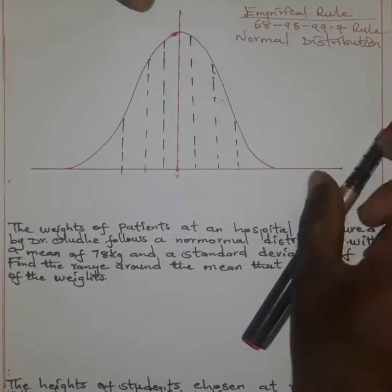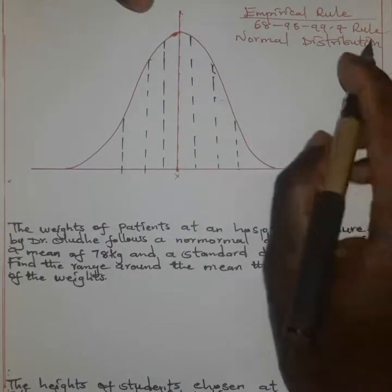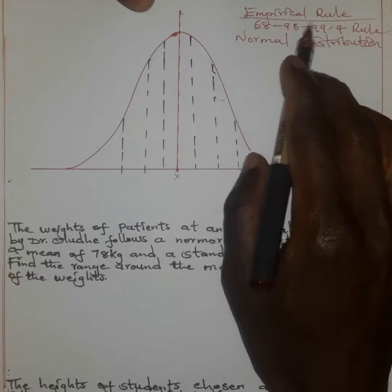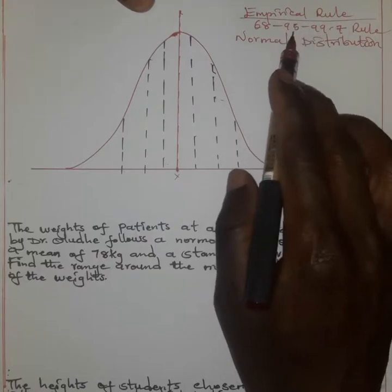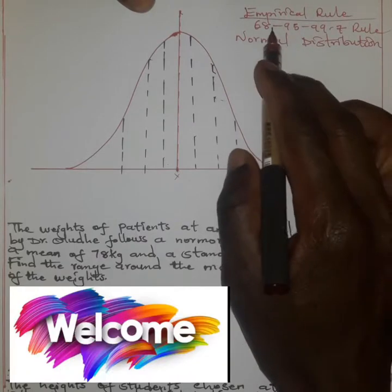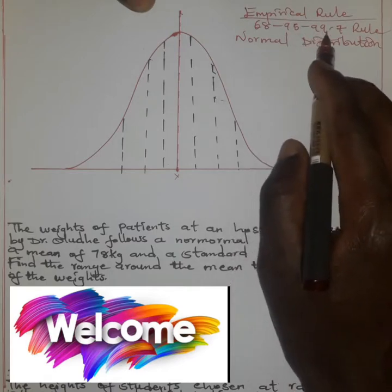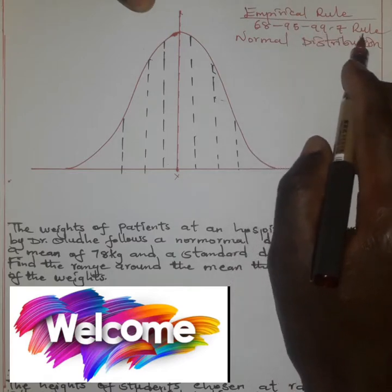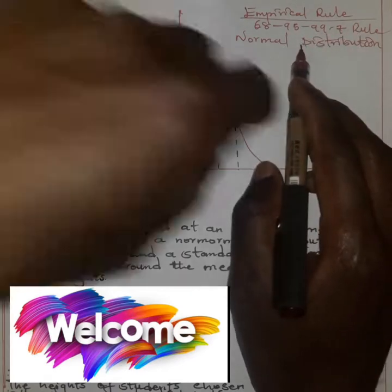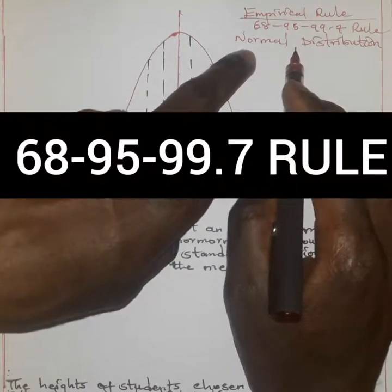Welcome to this statistics class where we get to learn about the empirical rule, which is famously known as the 68-95-99.7 rule. These are typical rules which are normally applied in what is known as the normal distribution.